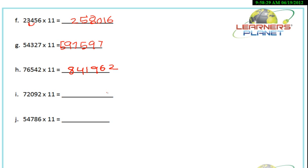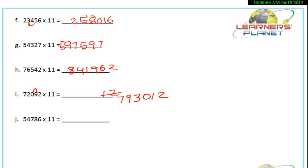Now, 70092 into 11. Let's do it: 2 as it is. 9 plus 2 is 11 — write 1 and carry 1. Then 0 plus 9 is 9 plus 1 carried is 10 — write 0 and carry 1. Then 2 plus 1 is 3. Then 7 plus 2 is 9, and 7 as it is. So 70092 into 11 gives you 771012.